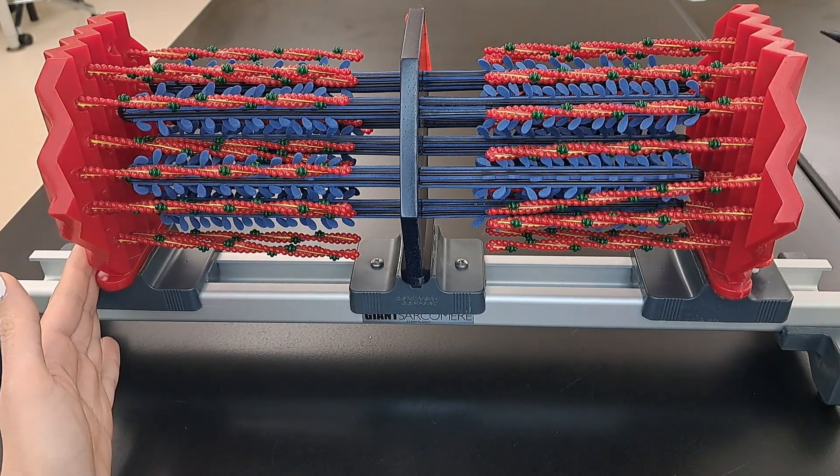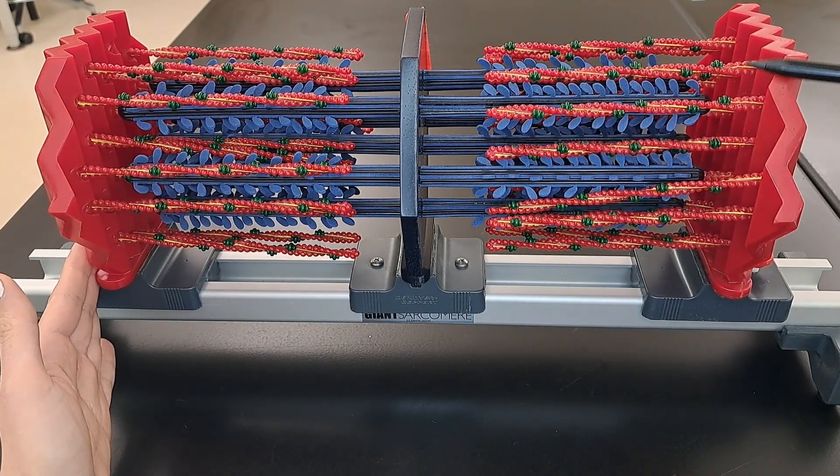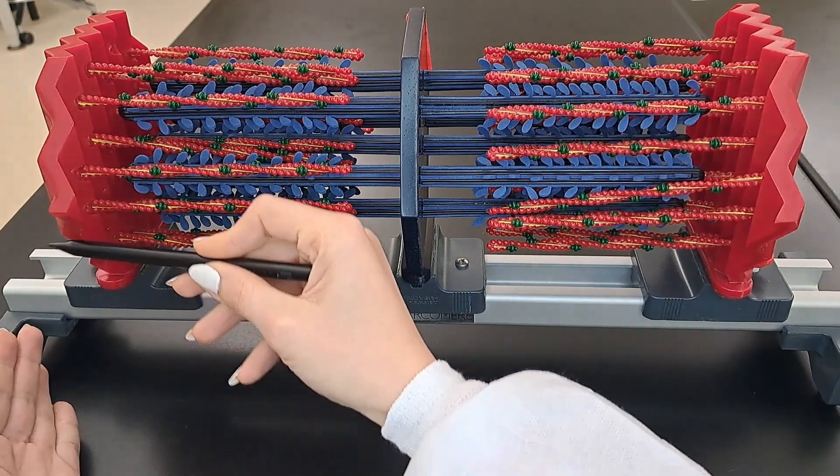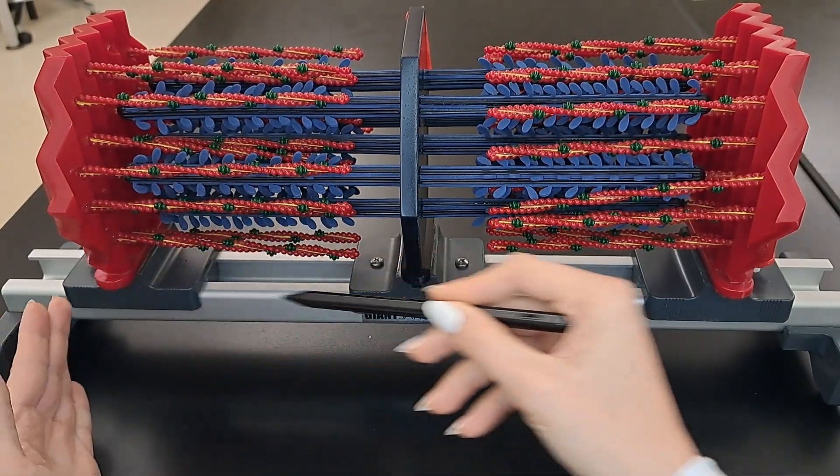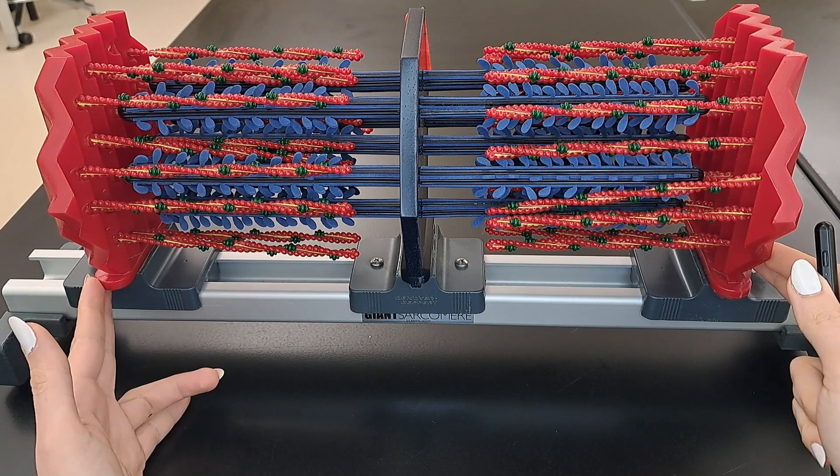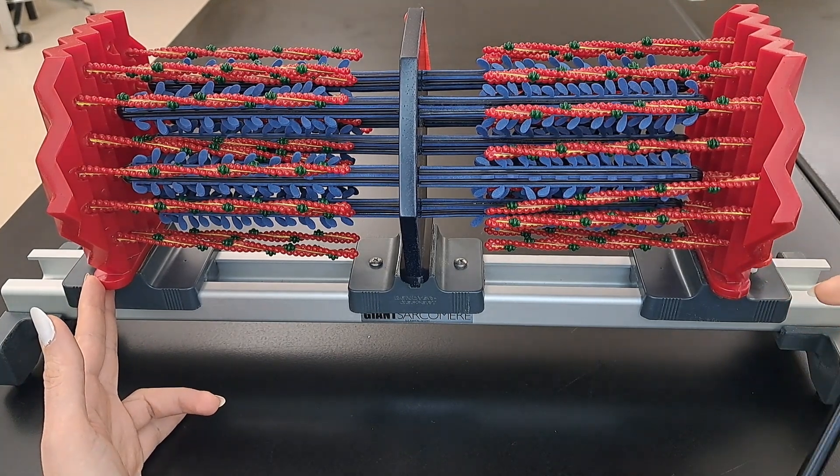The sarcomere extends from one Z-disk to the other Z-disk. This is one sarcomere. It consists also of two myofilaments.